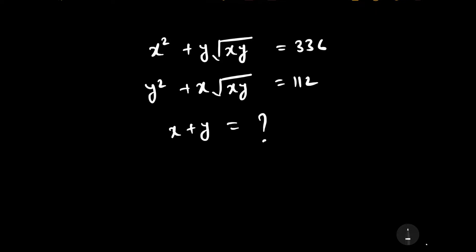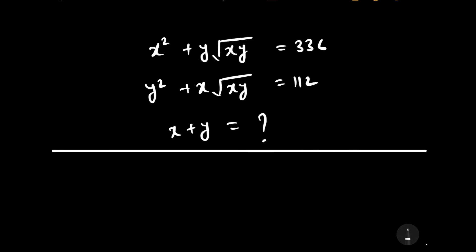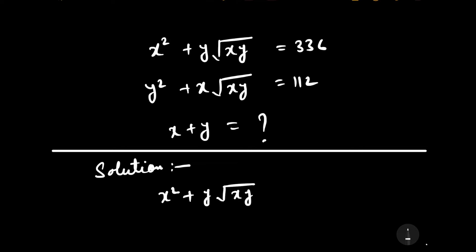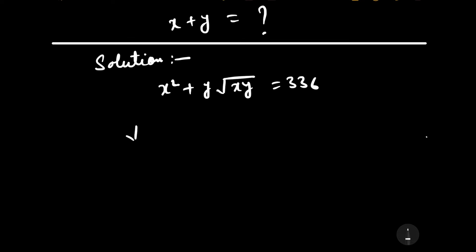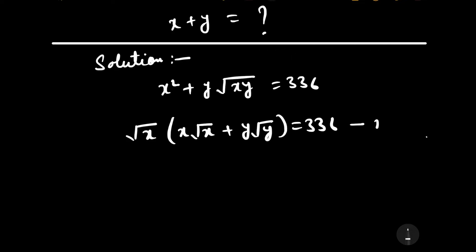Now let us start to solve this question. The first equation is x squared plus y times the square root of xy equals 336. If we take the common factor square root of x from x squared, we can rewrite it as x times square root of x plus y times square root of y equals 336. Let us consider this as the first equation.